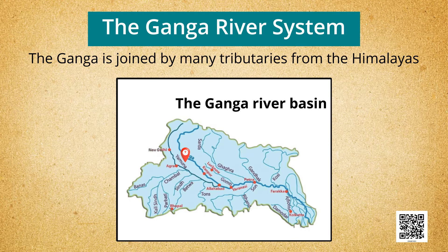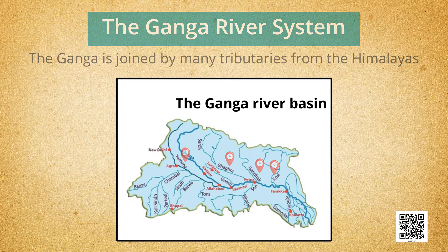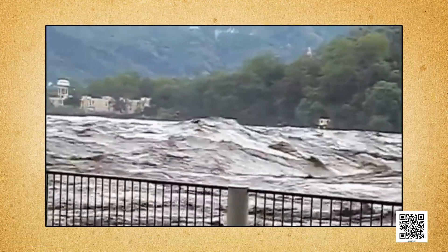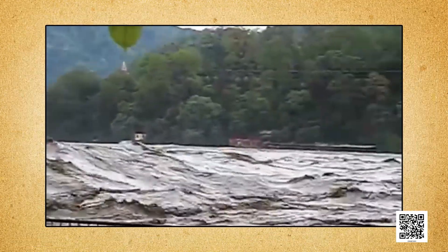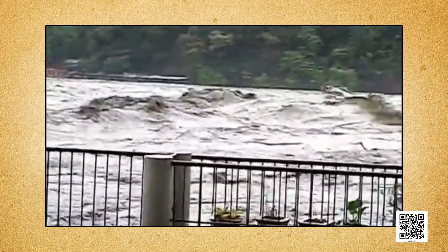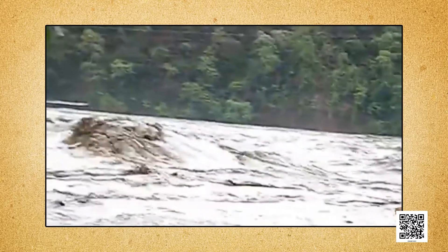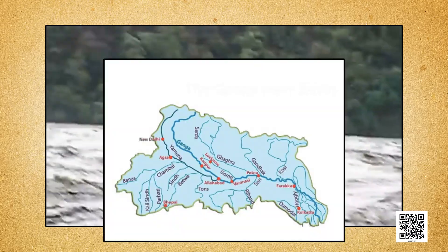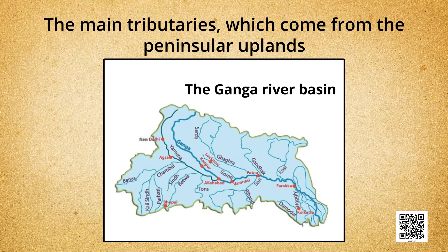The Yamuna flows parallel to the Ganga and as a right bank tributary meets the Ganga at Allahabad. The Ghaggar, the Gandak, and the Kosi rise in the Nepal Himalaya. They are the rivers which flood parts of the northern plains every year, causing widespread damage to life and property but enriching the soil for extensive agriculture. The main tributaries from the peninsular uplands are the Chambal, the Betwa, and the Son. These rise from semi-arid areas, have shorter courses, and do not carry much water.